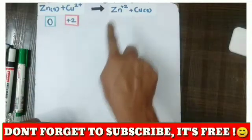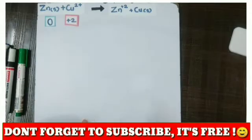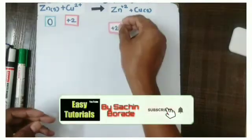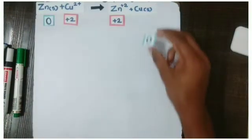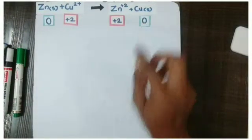Again, Zn²⁺ is a monoatomic ion, so its oxidation state or oxidation number will be +2. Cu is a neutral atom, so its oxidation number will be 0.